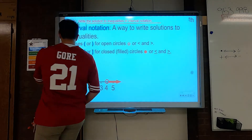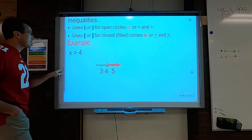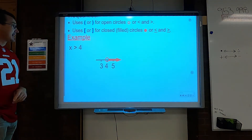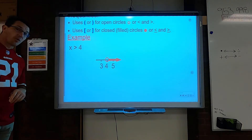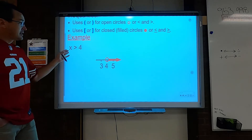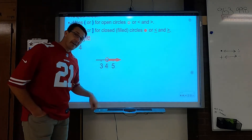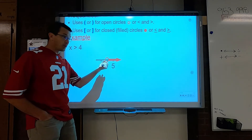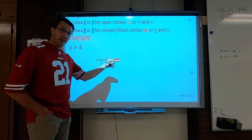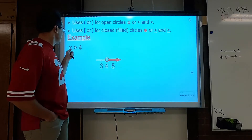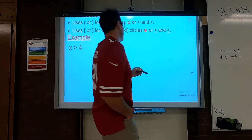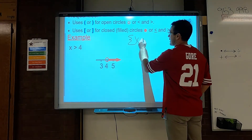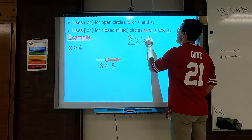So let me give you an example. We have x is greater than 4. This is the graph of x is greater than 4. It's a greater than sign — not equal to — and it's going in that direction. If I was to write that in set builder, I'd have to say x is greater than 4.